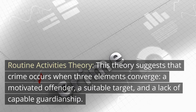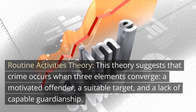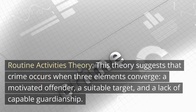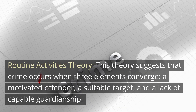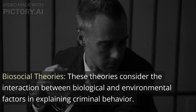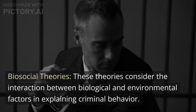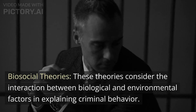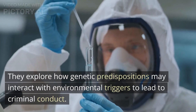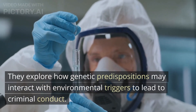Routine Activities Theory. This theory suggests that crime occurs when three elements converge: a motivated offender, a suitable target, and a lack of capable guardianship. Changes in these elements can influence crime rates. Biosocial Theories consider the interaction between biological and environmental factors in explaining criminal behavior, exploring how genetic predispositions may interact with environmental triggers to lead to criminal conduct.